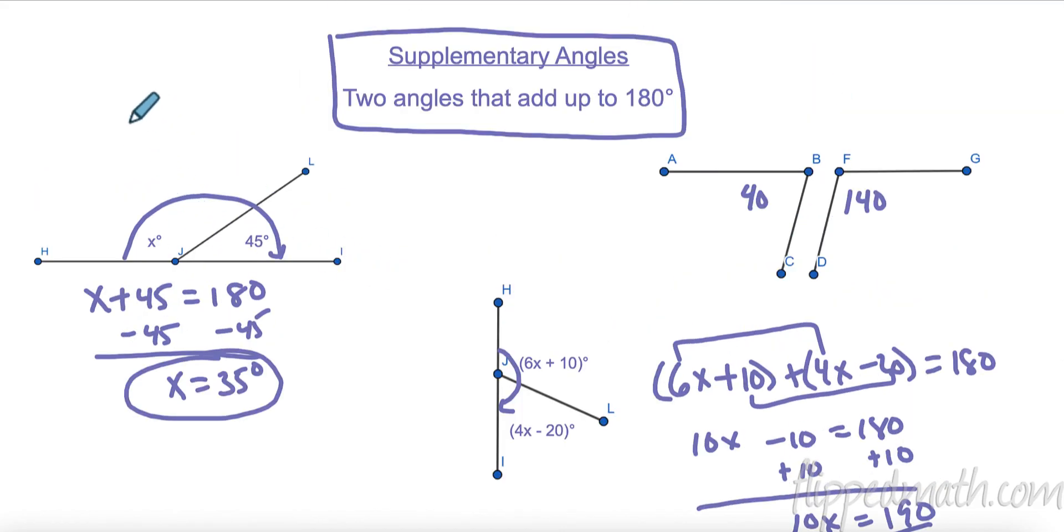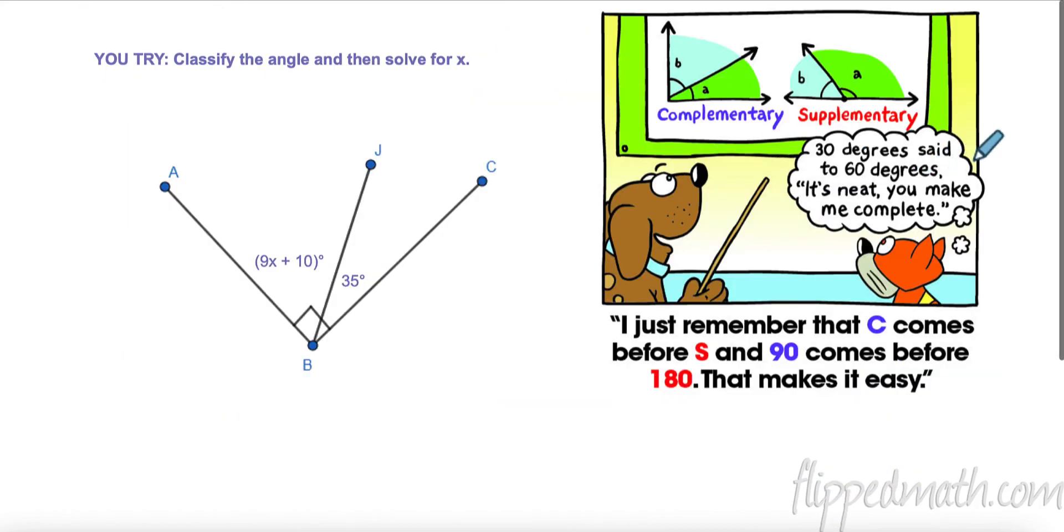There's a lot of different ways to remember them. I'm just going to show you one. If you have this word right here, if you add one line to this, this looks like a 90 degrees. So complementary is 90 degrees. If you add one line here, that looks like an 8 or 180 degrees. That's just one way to remember it. Another way here is 30 degrees. It is 6 degrees. It's neat. You make me complete. Well, that's great. I just remember that C for complementary comes before S supplementary and 90 comes before 180. That makes it easy.